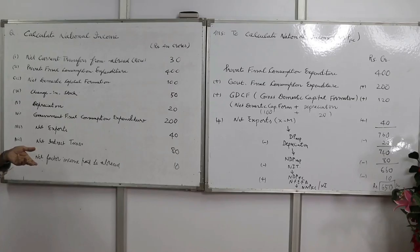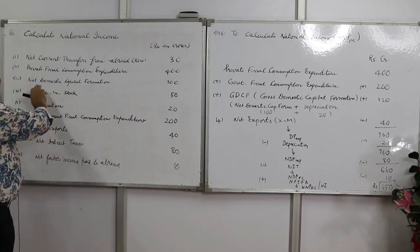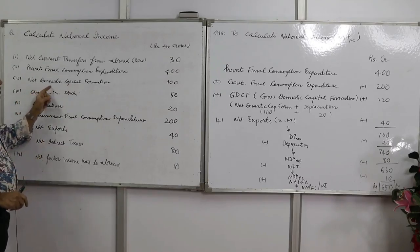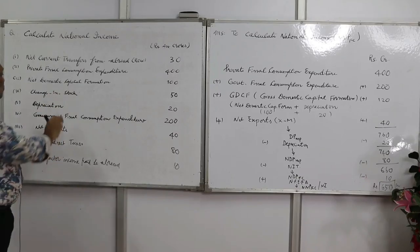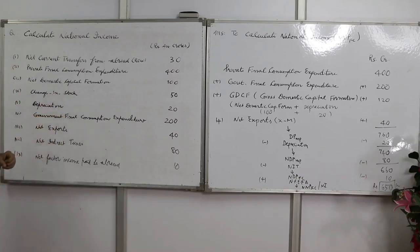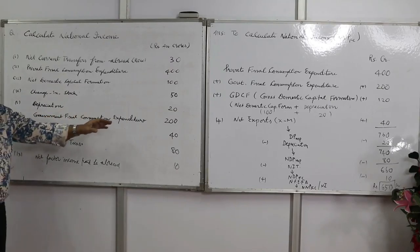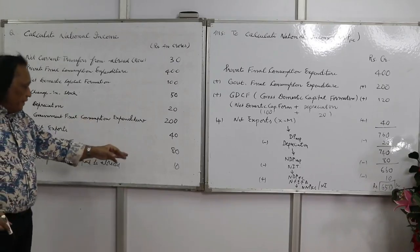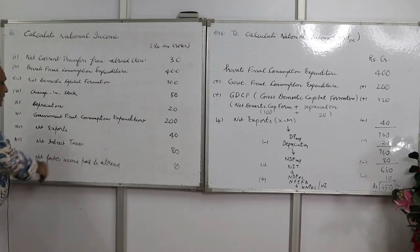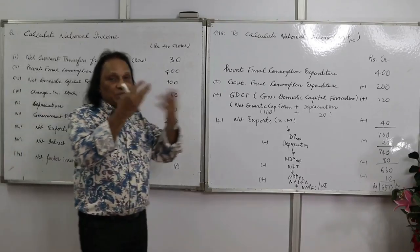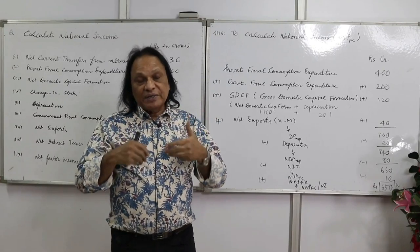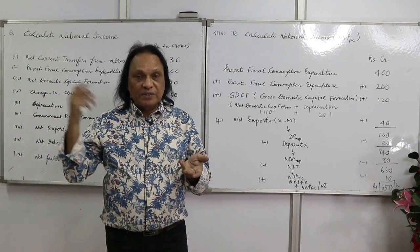The given values are: private final consumption expenditure — very important; net domestic capital formation — to this you add depreciation to get gross domestic capital formation. Change in stock has no significance here since they've given net domestic capital formation directly. Depreciation is 20, government final consumption expenditure is 200, net exports is 40, and net indirect taxes (NIT) is 80.